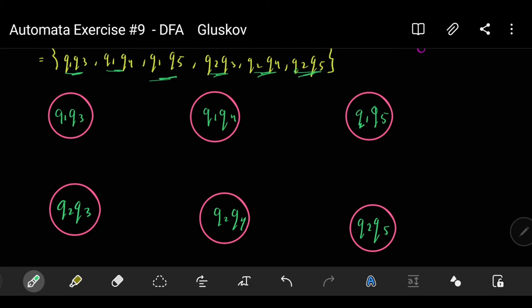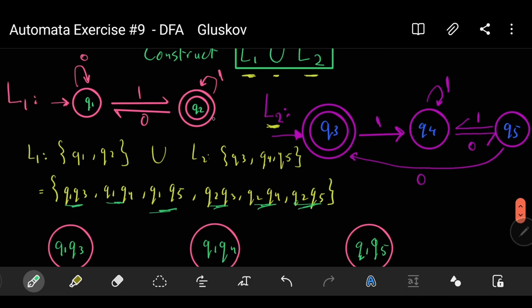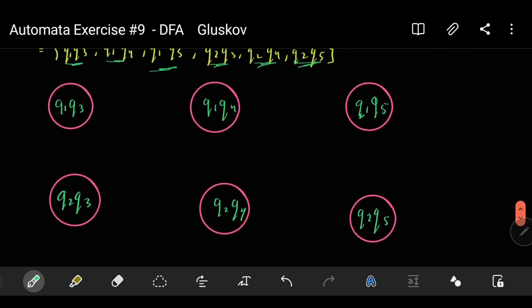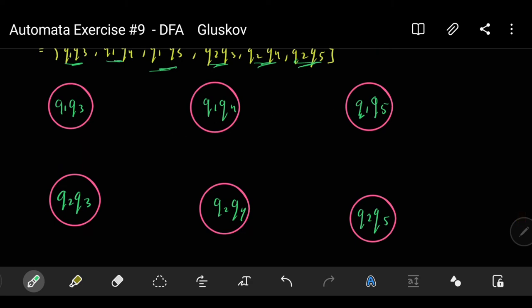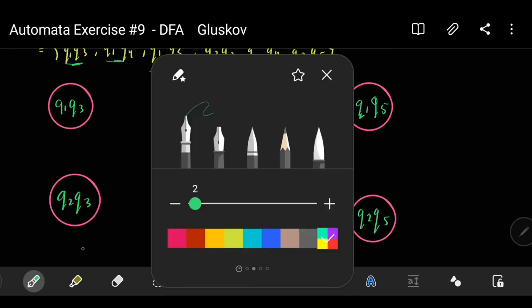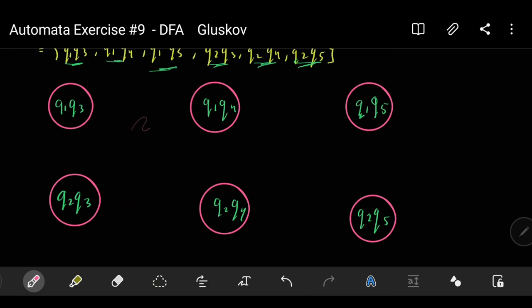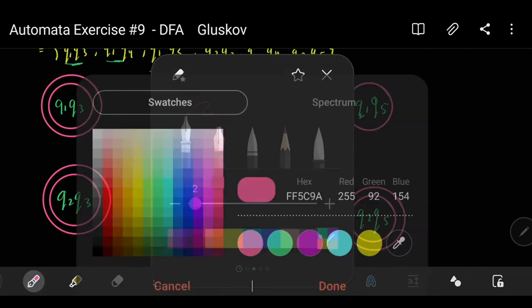Now, what are the final states in both automata? The first one is Q2 and the second one is Q3. So every state of these six states containing Q2 or Q3 will be considered as a final state. Q1 Q3 is a final state. Q1 Q5 does not contain Q3 or Q2. Q2 Q3, yes. Q2 Q4, yes. Q2 Q5, yes. So these are the final states.